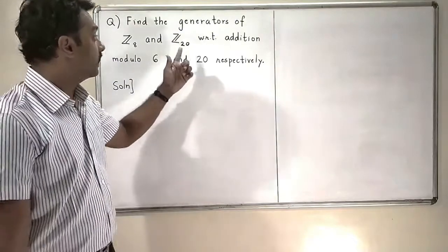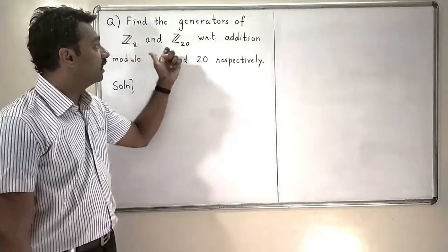In this problem, we will find the generators of Z8 and Z20.